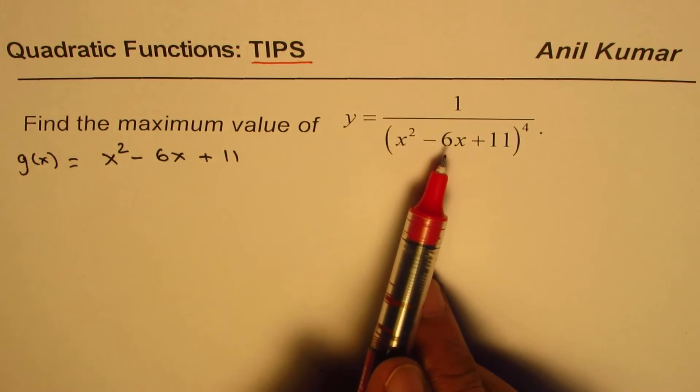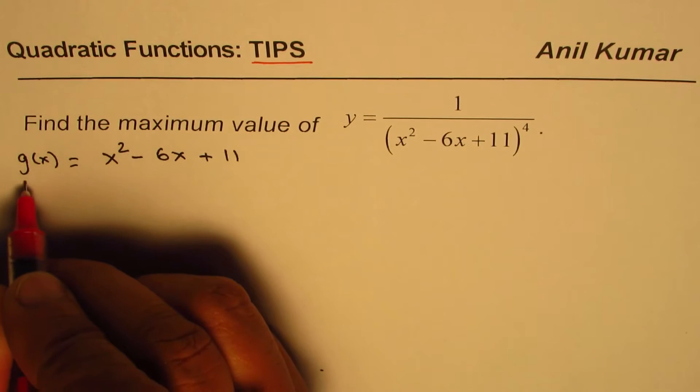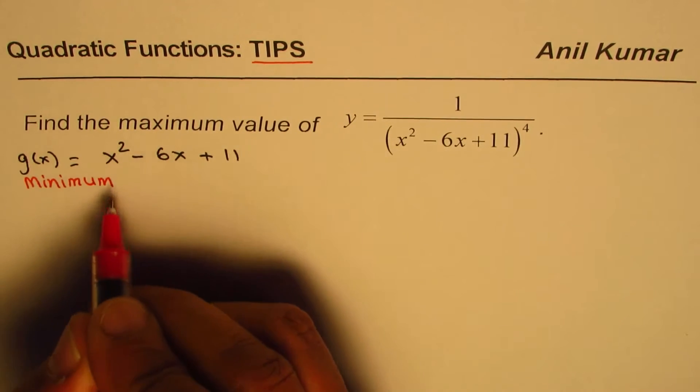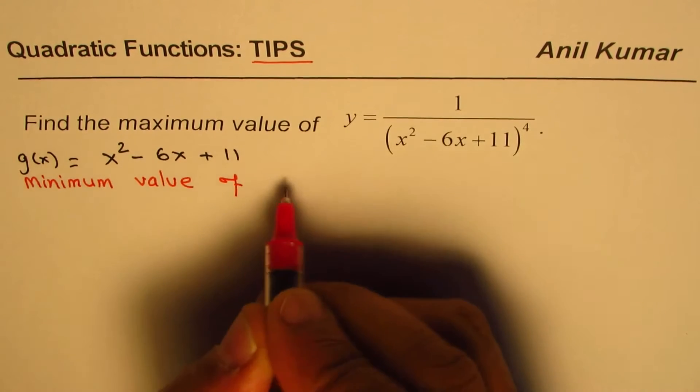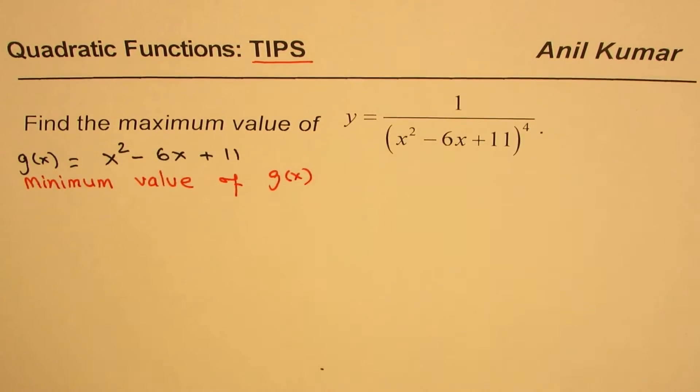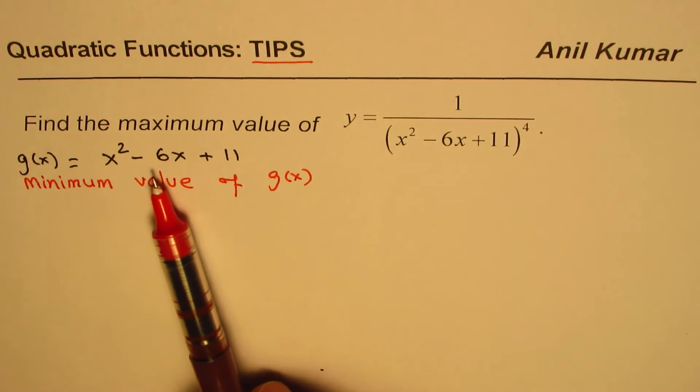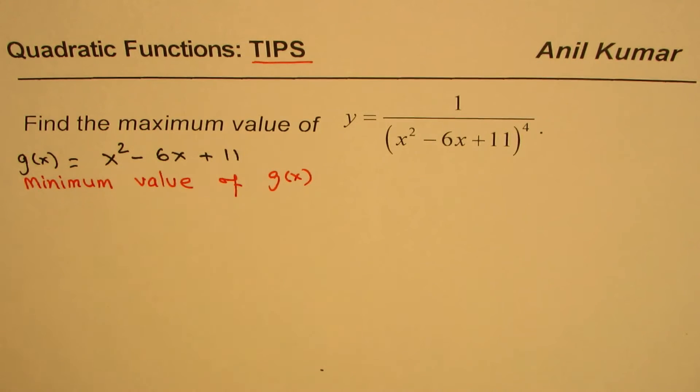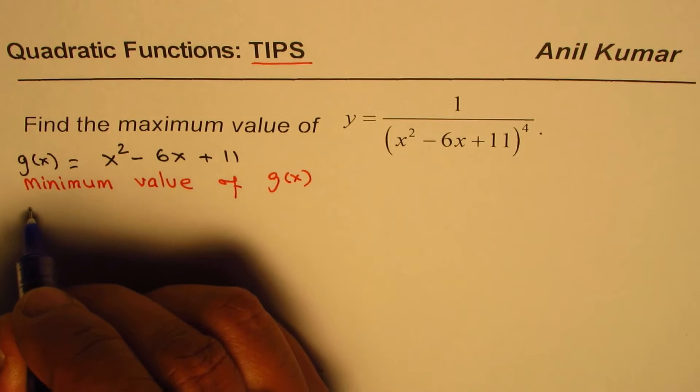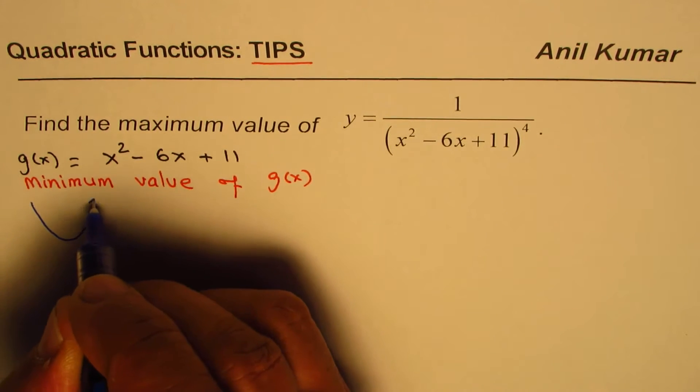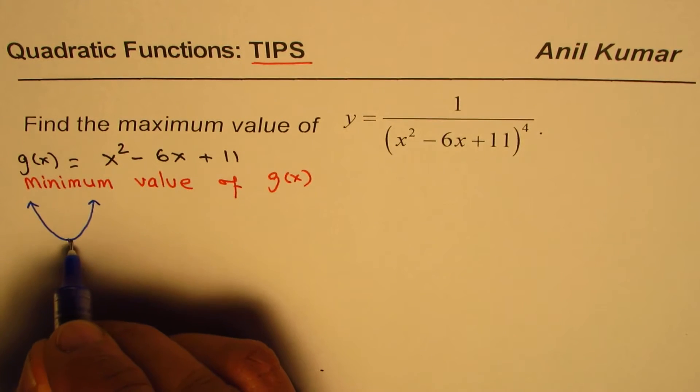then it really means we want to find minimum value of this function. We are calling it g of x. So, that is what it means. Now, clearly, x squared minus 6x plus 11 is a parabola which opens upwards. So, it opens upwards. Since it opens upwards, it does have a minimum.